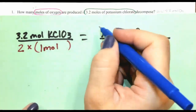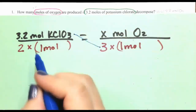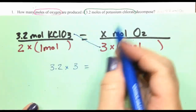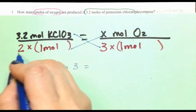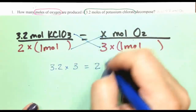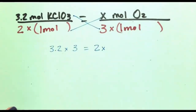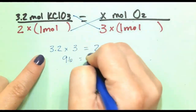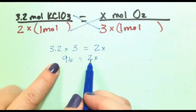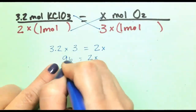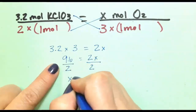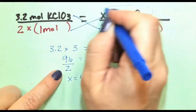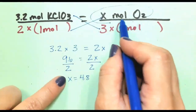Cross-multiplying: 3.2 times 3 times 1 equals 2 times 1 times x, giving us 9.6 equals 2x. Dividing both sides by 2, x equals 9.6 divided by 2, which is 4.8. So the answer is 4.8 moles of oxygen.